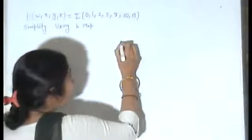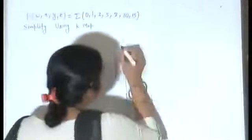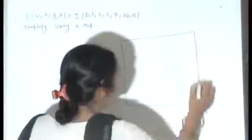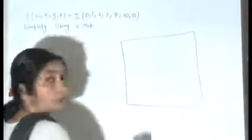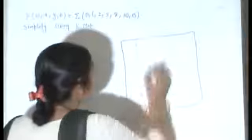2 and 3. Because we have 4 variables, we have to make 16 blocks. Because we have to make 2 to the power 4, so we will make 16 blocks here. So this is our 16 blocks.